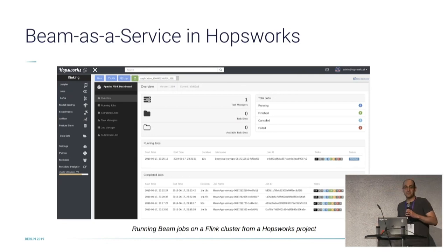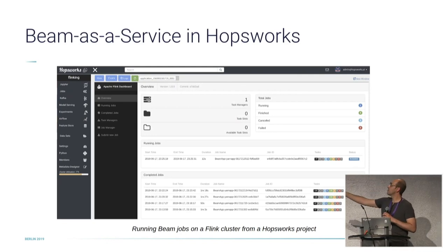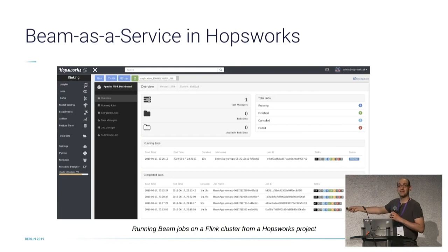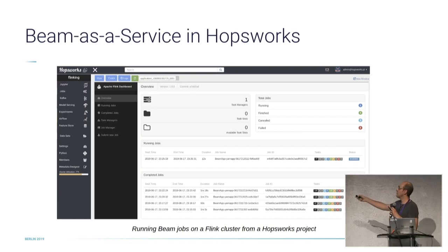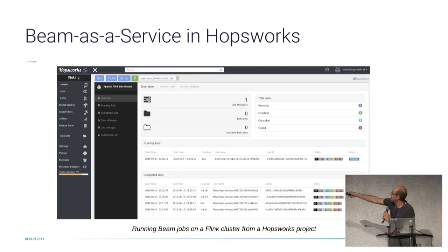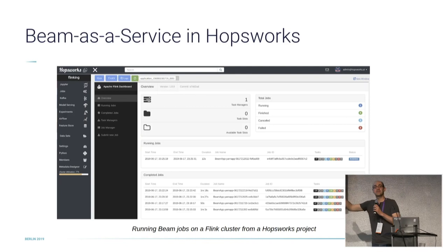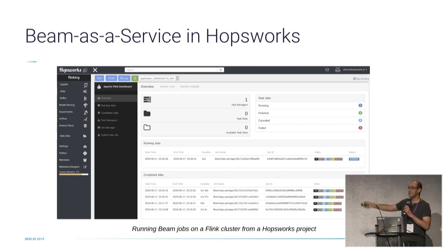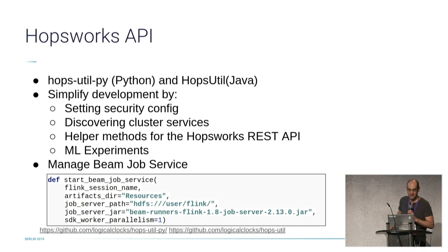This is a screenshot showing the Hopsworks platform. Inside, you can see this is an Apache Beam interface of a cluster related to a specific project. Beam jobs are launched in the Flink cluster — Python Beam jobs are being launched here. We will show this in the demo later at the end of the presentation.